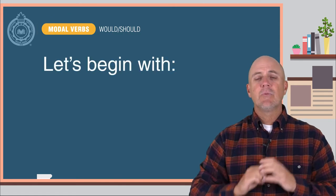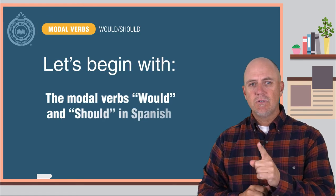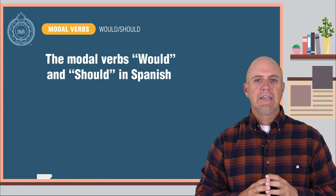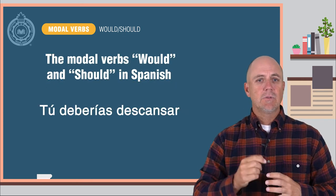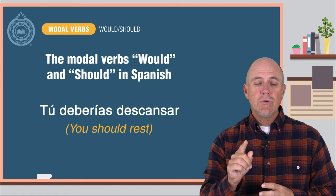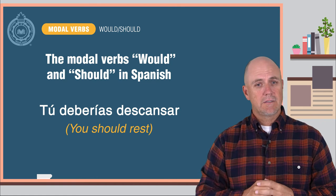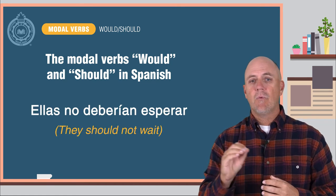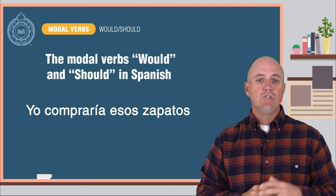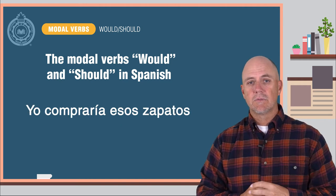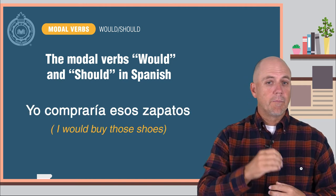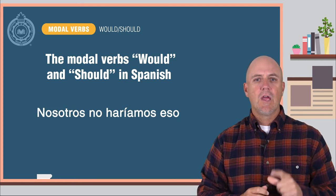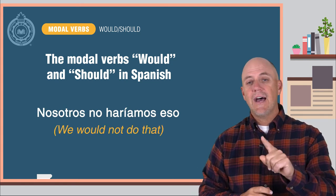Let's begin with what you already know: how to use the modal verbs WOULD and SHOULD in Spanish. Here are some examples. Tú deberías descansar — You should rest. Ellas no deberían esperar — They should not wait. Yo compraría esos zapatos — I would buy those shoes. Nosotros no haríamos eso — We would not do that.